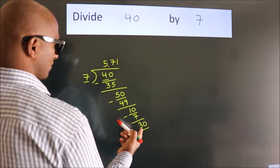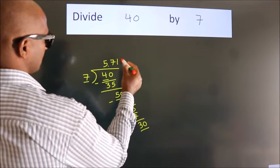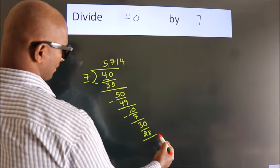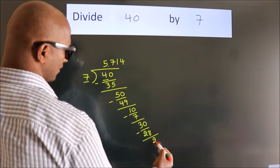A number close to 30 in the 7 table is 7 fours, 28. Now we subtract and get 2.